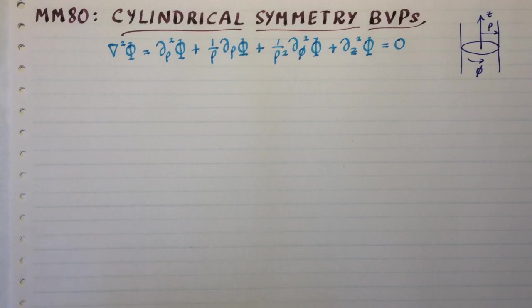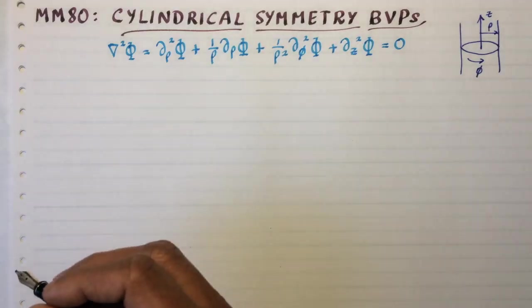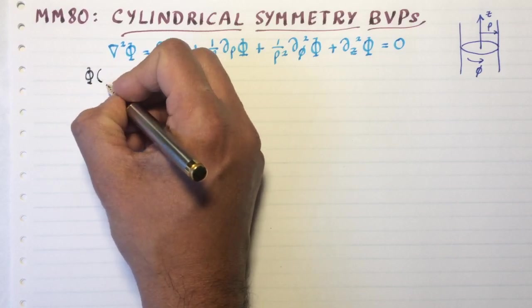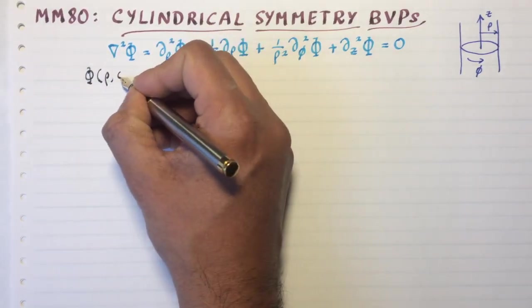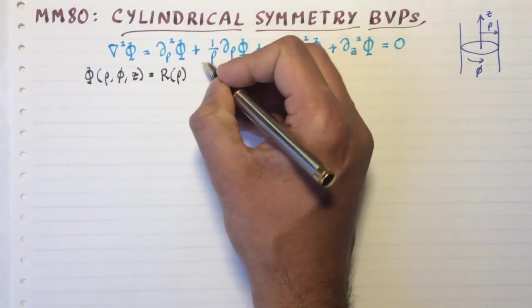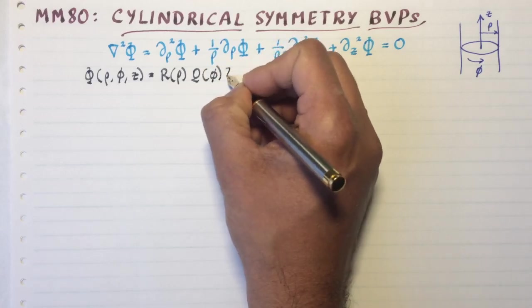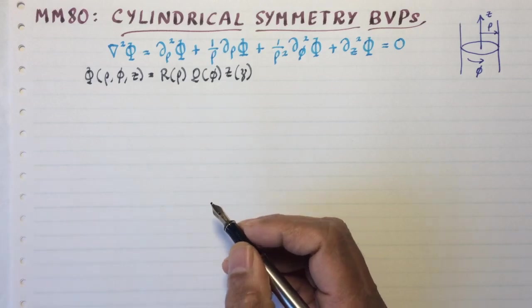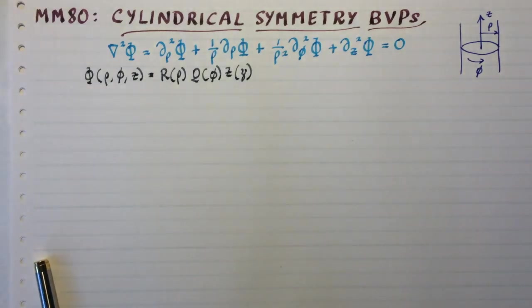Now the type of solution that we're looking for is again the product, and by the uniqueness of Laplace's equation, if that turns out to be one solution, then it is the only solution. That's a great advantage of this method. So writing it as three separate products, I get R(ρ), Q(φ), and Z(z). If I substitute it and divide both sides by the product of R, Q, and Z, I end up getting the following equation.